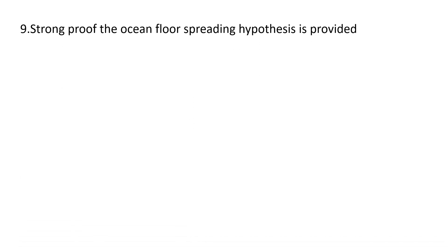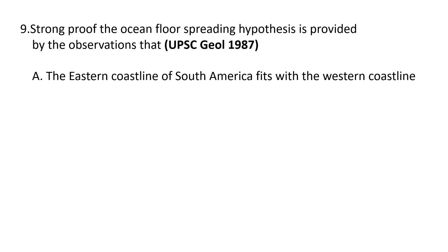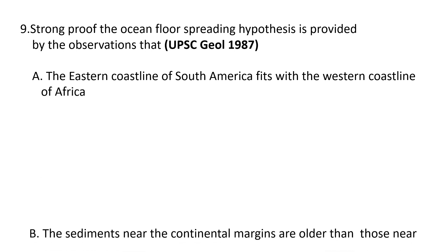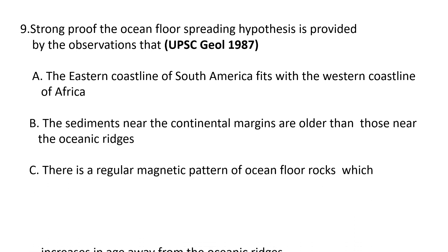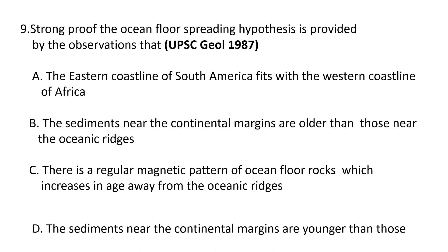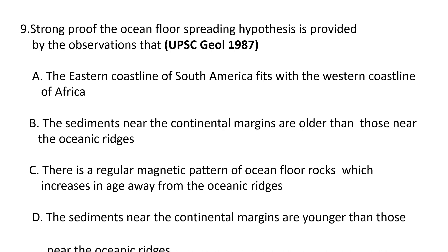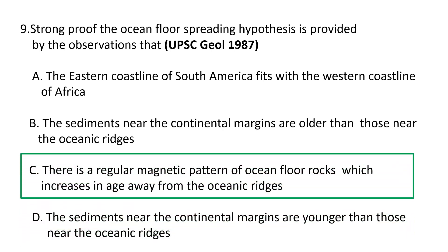Ninth question: strong proof of the ocean floor spreading hypothesis is provided by the observation that — a) the east coastline of South America fits the western coastline of Africa, b) sediments near the continental margins are older than those near the oceanic ridges, c) there is a regular magnetic pattern of ocean floor rocks which increases in age away from the oceanic ridges, and d) sediments near the continental margins are younger than those near the ocean ridges. The correct answer is c). As you go away from the ocean ridge, the age increases.